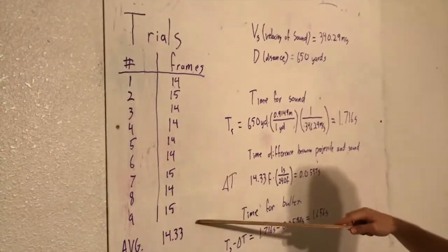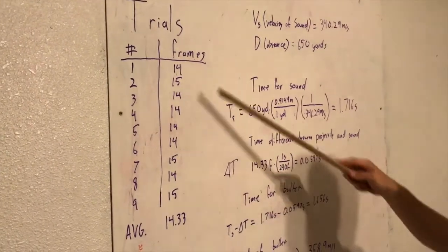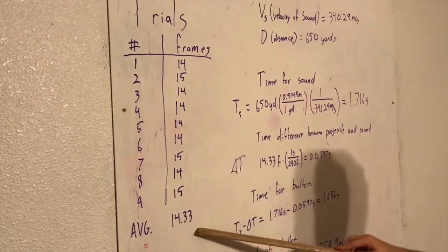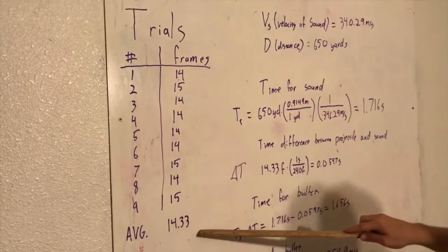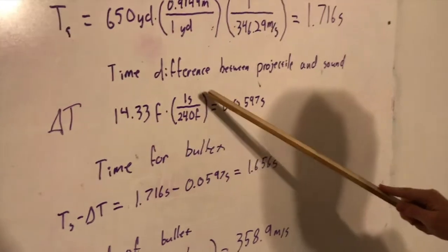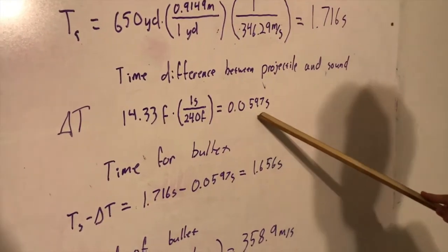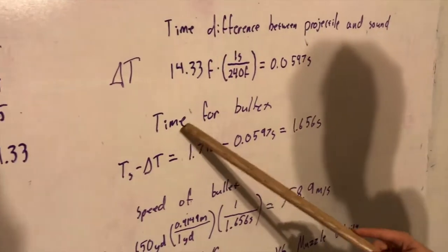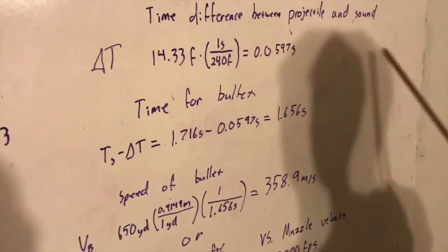We averaged all the differences in sound and the projectile in frames in post-editing to about 14.33 frames, which we used here divided by our frame rate, 240 frames per second to get 0.0597 seconds. So the time for the bullet to get from the gun to the target...